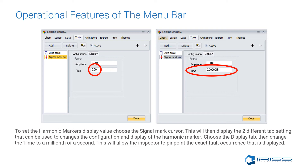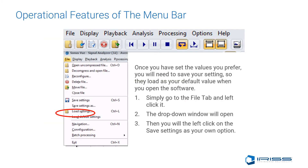Choose the Display tab, then change the time to a millionth of a second. This will allow the inspector to pinpoint the exact fault occurrence that is displayed. Once you have set the values you prefer, you will need to save your settings so they load as your default when you open the software next time.